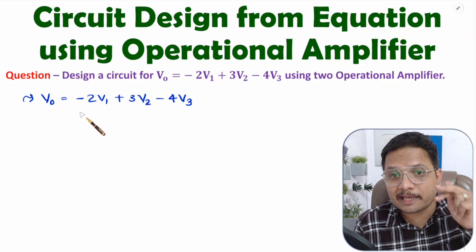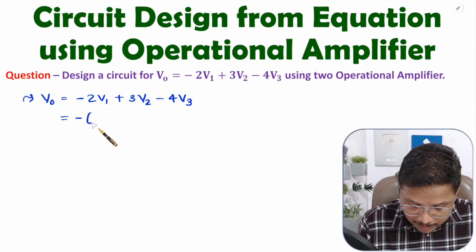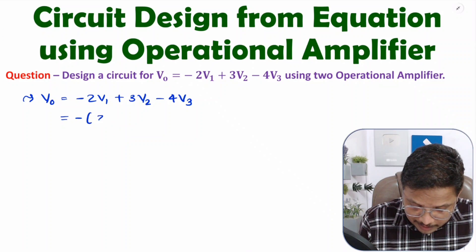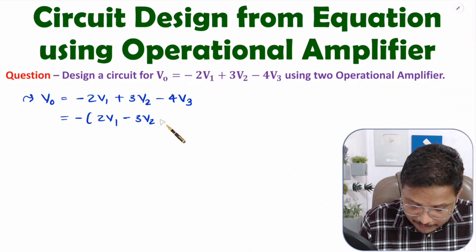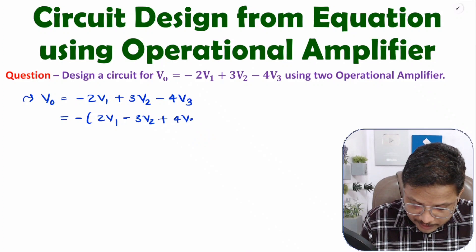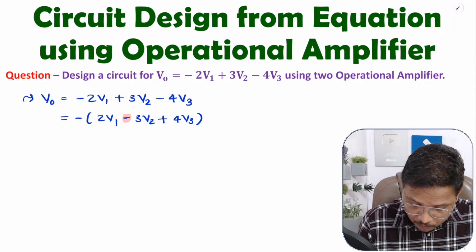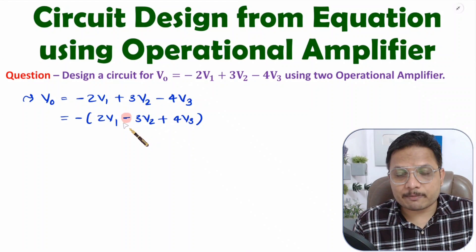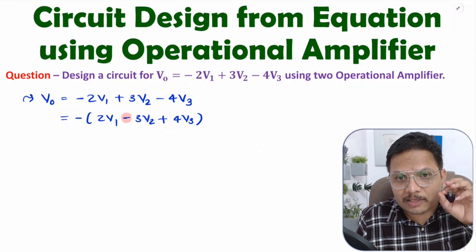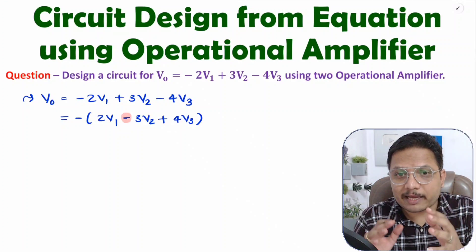To use scaling with inverting configuration, we first need to take the negative sign common out of the equation. If you take negative sign common, then the V0 equation becomes: 2V1 minus 3V2 plus 4V3. Observe that with V2 we now have a negative sign. I will explain the basic block diagram for this equation and then build the circuit from it.